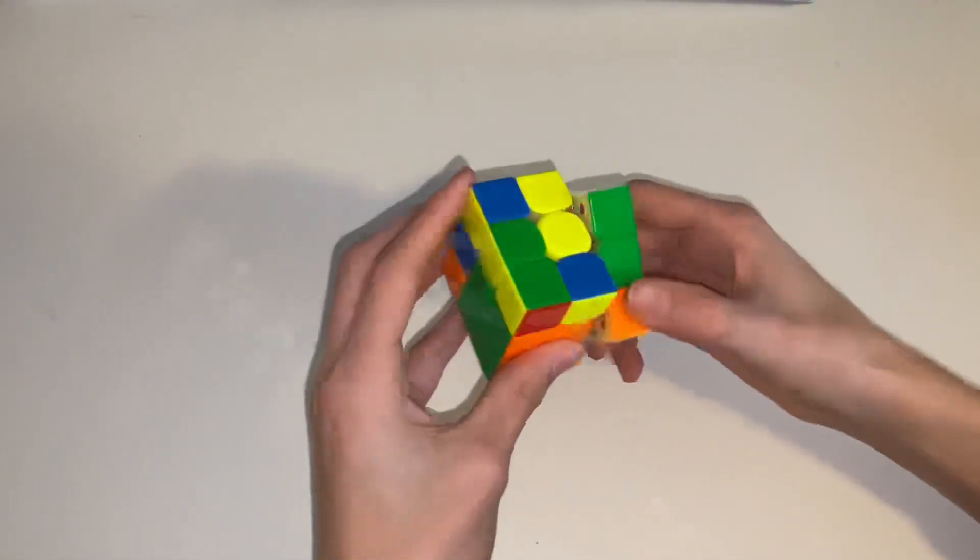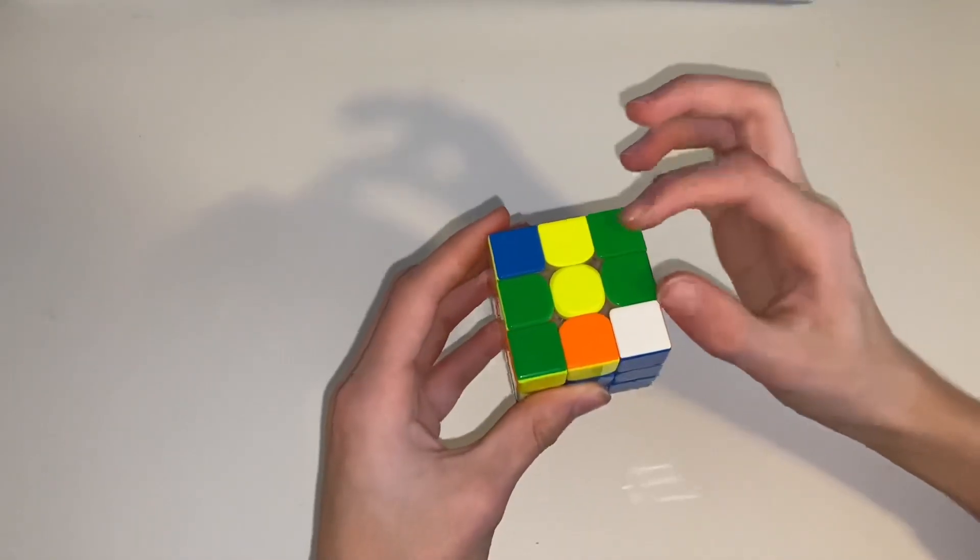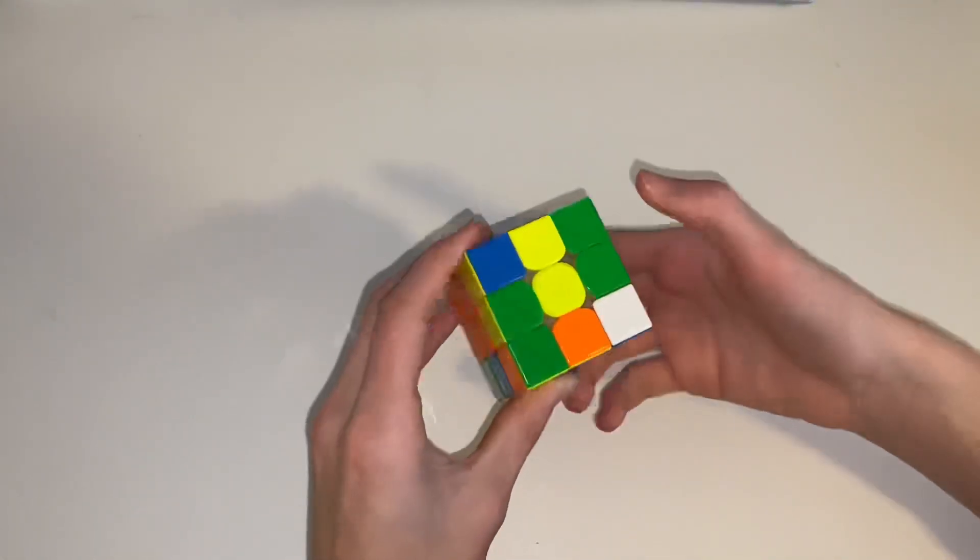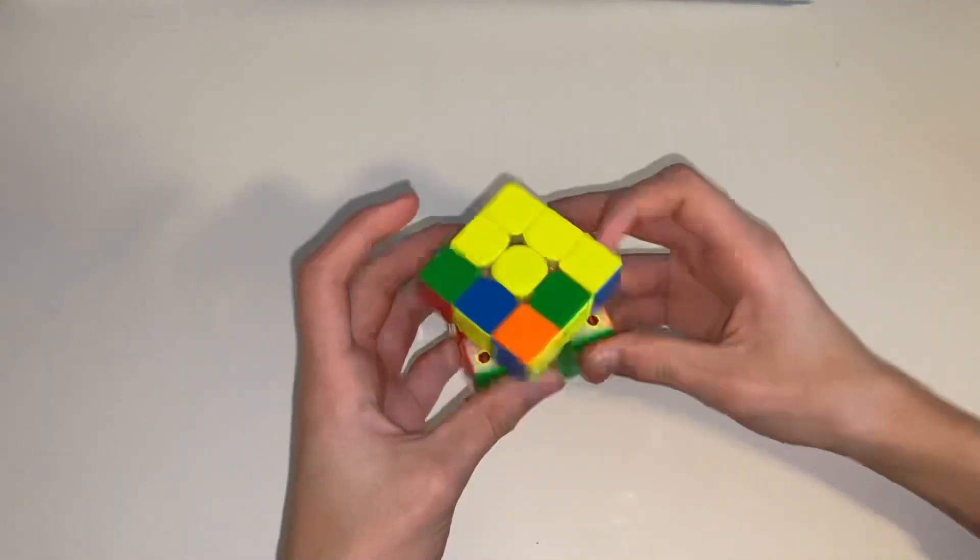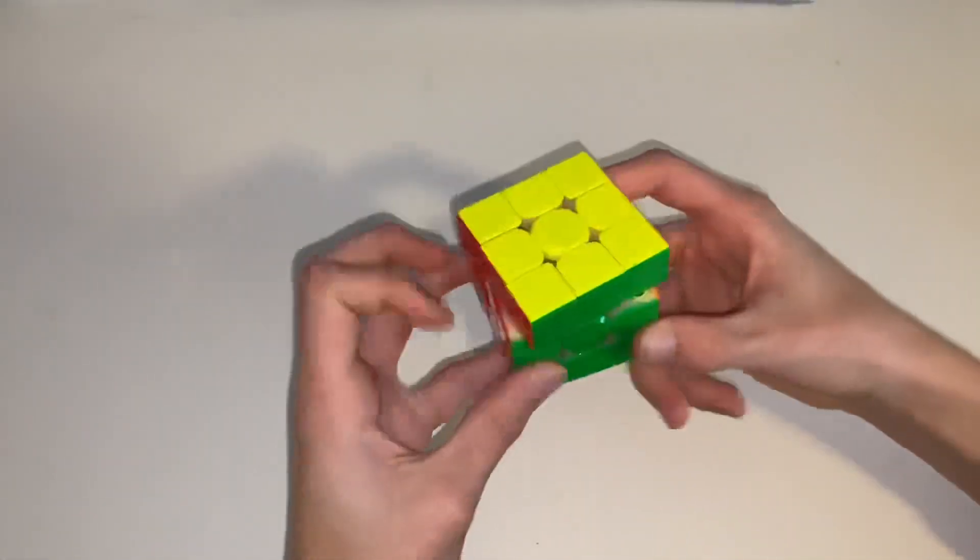Then we see this red piece, red and green pair that we take out and put into the back. And then we solve this one. Then we do OLL and PLL.